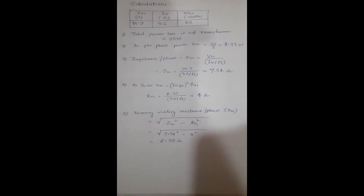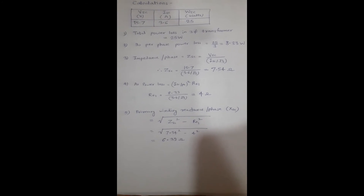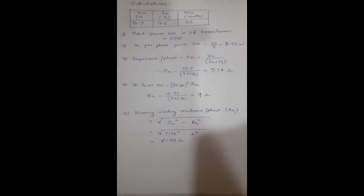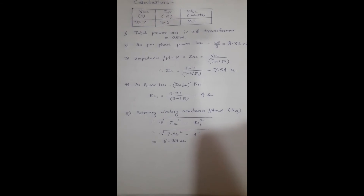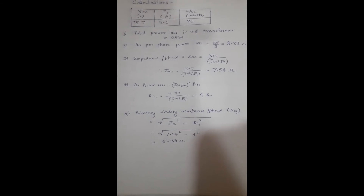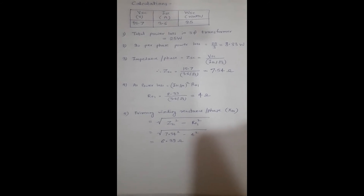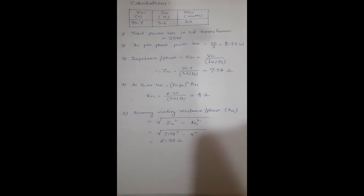The last parameter to calculate is reactance per phase, X01. The formula is X01 = √(Zsc² − R01²). Substituting the values of Zsc = 7.54 ohms and R01 = 4 ohms into this formula, we get the primary winding reactance per phase X01 = 6.39 ohms.